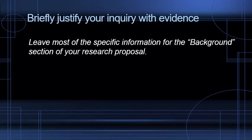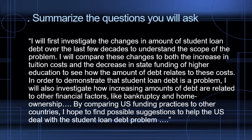Even though you're giving some evidence, you leave most of the specific information for the background section. The statement of purpose is a kind of preview of the proposal as a whole. You summarize the questions you're going to ask: 'I will first investigate the changes in the amount of student loan debt. I will compare these changes. I will investigate how...' — this will be described in more detail in the description and methodology section, where you go into depth about the specific questions, specific sources, and how you're going to be making these comparisons. But here it's an overview of the broad questions you're going to ask and try to answer.